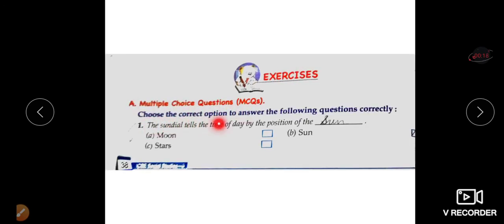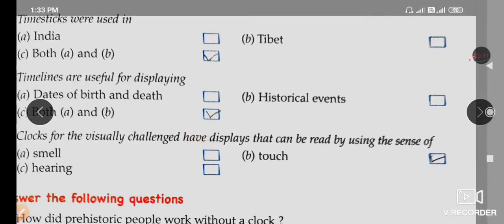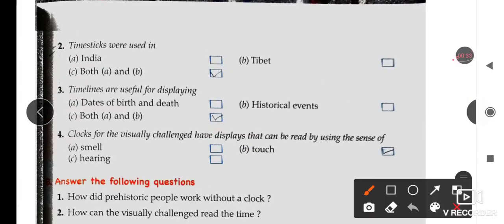Choose the correct option to answer the following questions correctly. Question 1: The sundial tells the time of day by the position of the sun. Option B is correct. Question 2: Time sticks were used in both A and B, means India and Tibet.